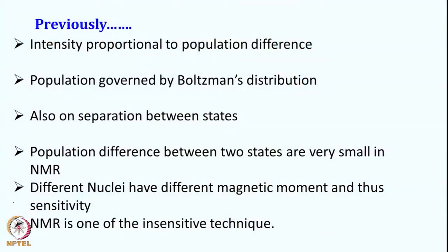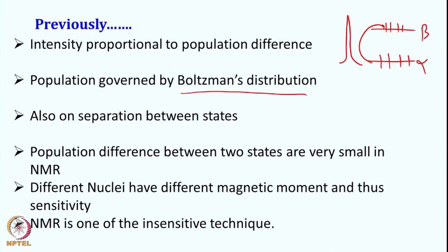We will revise some of the concepts we had seen earlier. Previously, when we started the course, we had seen that the intensity of a resonance is proportional to the population difference between two states. Suppose here I have an alpha state and a beta state — how much is the population here and how much is the population here. This difference gives you what the intensity of your signal will be.